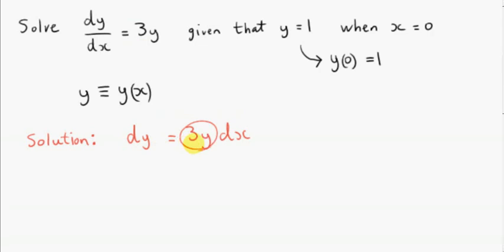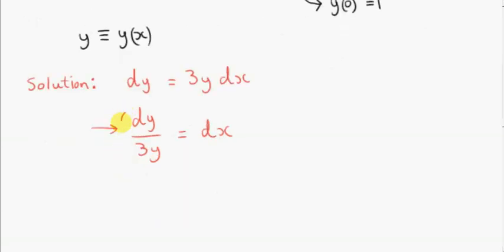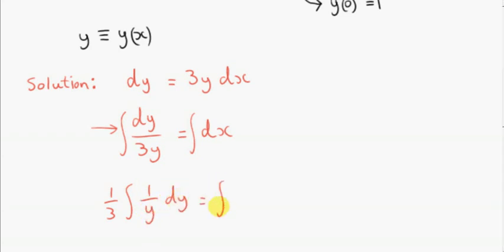We divide both sides by 3y. So now the differential equation is separated. The y variable is on the left-hand side and the x variable is on the other side. The next step is just to put an integral sign in front of both sides — we're going to integrate both sides. You can write this as one third integral of 1 over y with respect to y equals the integral of dx, if you like.